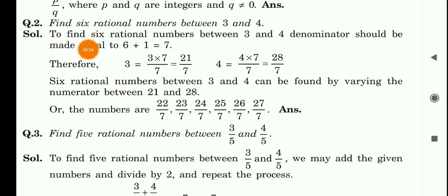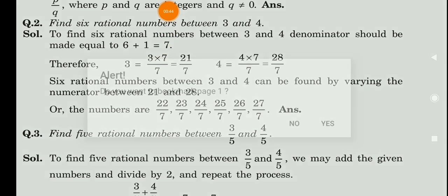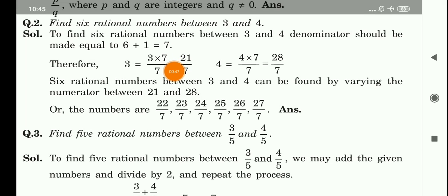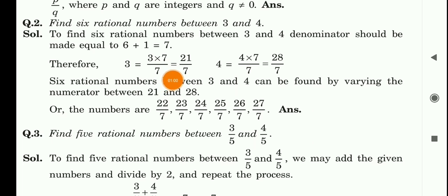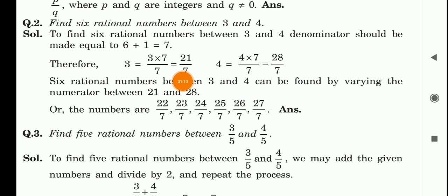ठीक है, हमको जितना भी rational number find करना हो, उस value में plus 1 कर देना होता है। जैसे 5 होता तो 5 plus 1, 3 होता तो 3 plus 1 — यहाँ पर 6 है इसलिए 6 plus 1 = 7. तो हमारा 7 आ गया। अब हमारी number values 3 और 4 हैं, तो 3 और 4 में 7 का multiply करेंगे — ऊपर और नीचे। So 3 multiply 7 upon 7 = 21 upon 7, and the second number is 4 multiply 7 = 28 upon 7.